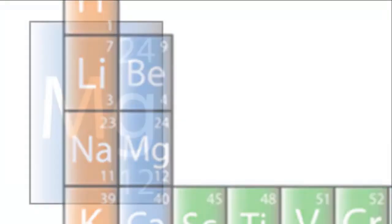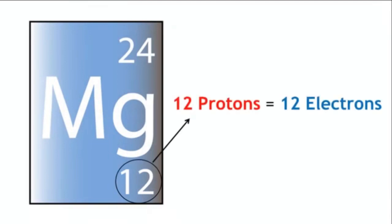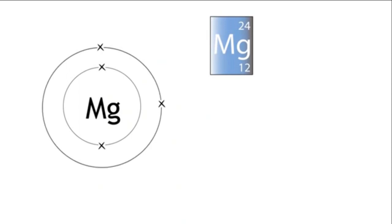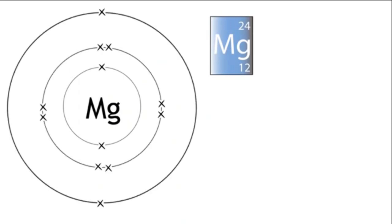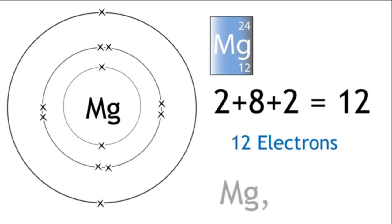Magnesium has twelve protons. Therefore, it has twelve electrons. The first two are placed in the first shell. The next eight are placed in the second shell. And the last two are placed in the third shell. Two plus eight plus two — twelve electrons. This would be written as Mg, 2, 8, 2.